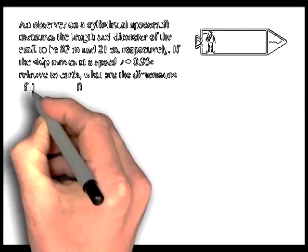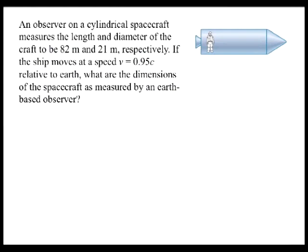Consider a short example. An observer on a cylindrical spacecraft measures the length and diameter of the craft to be 82 meters and 21 meters, respectively. If the ship moves at a speed of v equal to 0.95c relative to Earth, what are the dimensions of the spacecraft as measured by an Earth-based observer?